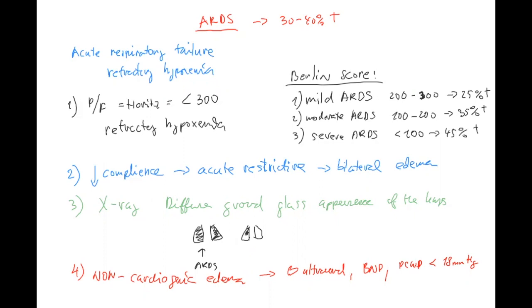So four things to remember: Horowitz, compliance decrease, x-ray - they will be diffusely impacted, and of course that the heart is okay. So this is definition. It's acute respiratory failure with refractory hypoxemia. There's a decreased compliance, and the Horowitz is below 300 definitely, and it's non-cardiogenic edema. And let's get to the pathogenesis, or let's get to causes. And please, ARDS, it's a syndrome. That's important. So it's a syndrome. That's why there are many, many, many causes.